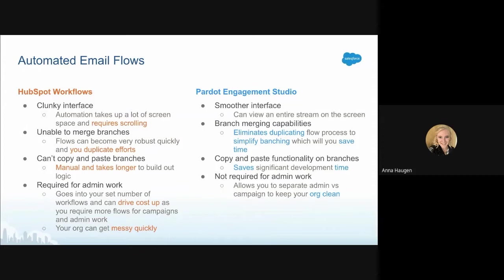In HubSpot workflows, you're unable to merge branches, so flows can become very robust quickly and duplicate efforts, and there's no way to circle back to the original flow. While in Pardot Engagement Studio, you have branch merging capabilities, which eliminates duplicating flow processes and can simplify branching. This will save you a significant amount of time, and I'll show you what this looks like in the next slide to give a better understanding of what this means.